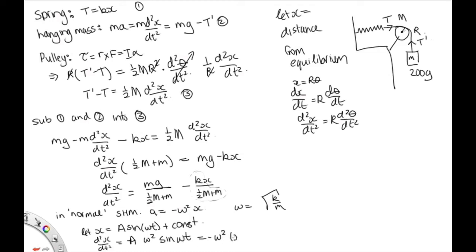So that's x minus a constant. So this is equal to minus omega squared x plus omega squared constant.